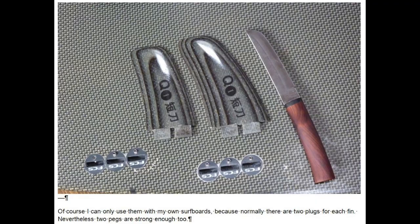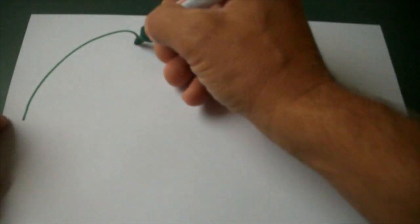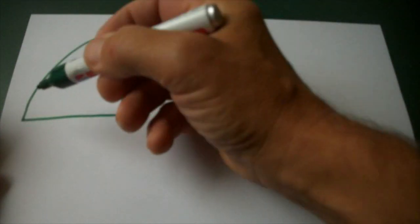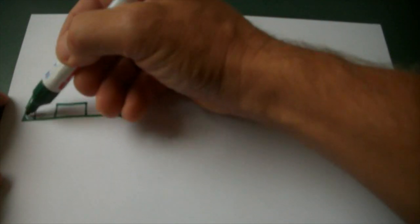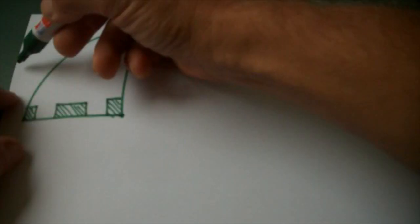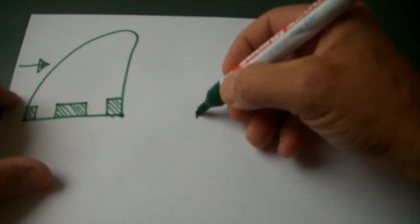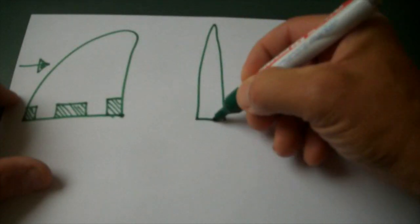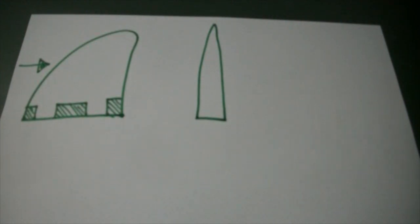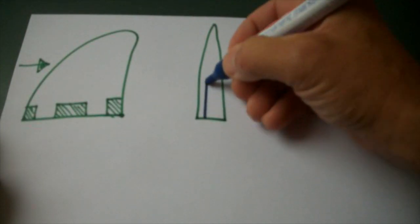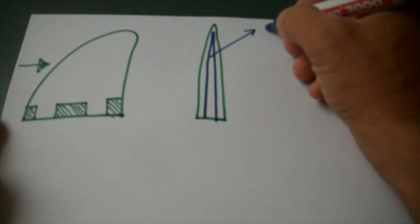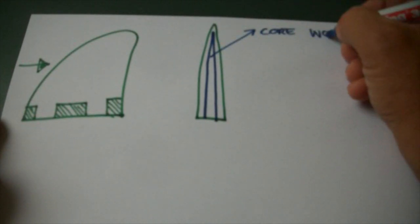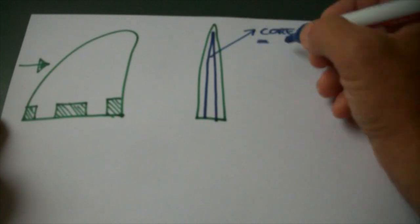First I want to talk about strength. This is my fin looking from the side, including the pegs on the base. Looking from the front my fin looks somewhat like this. Inside is my wooden core. It goes all the way down into the plug section.